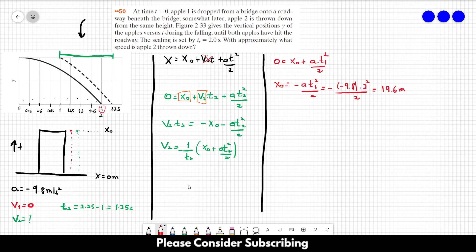So x0 is 19.6 meters. All we have to do now is just replace these letters by numbers. So v2 equals minus 1 over 1.25 times 19.6 plus minus 9.8 times 1.25 squared over 2. And if you do this calculation, you would find roughly 9.6 meters per second. So this is the velocity of apple 2.